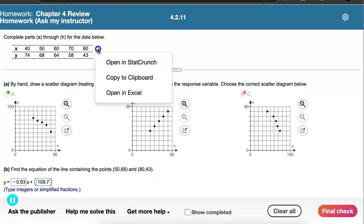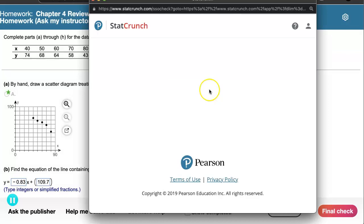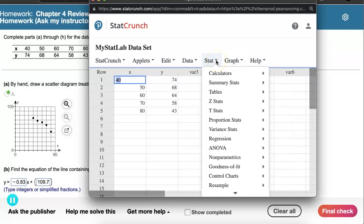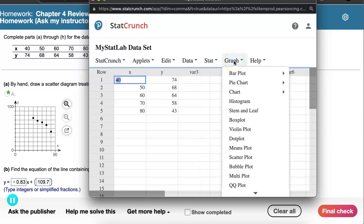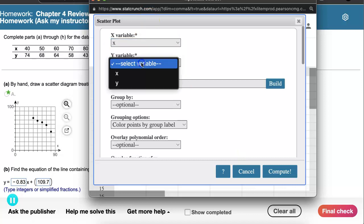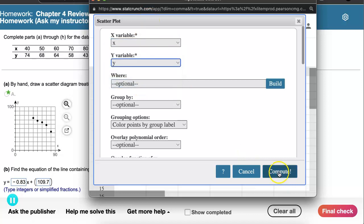So let's go ahead and open up this data in StatCrunch. If we just want to look at the scatter plot, let's go down to that option underneath Graph, we'll select X and Y, and Compute.